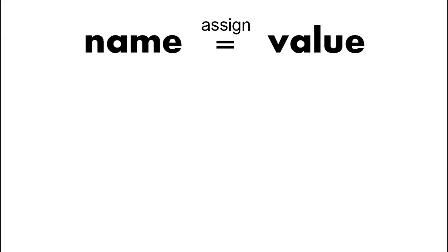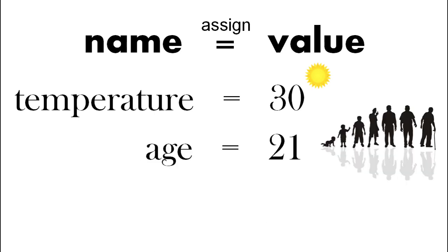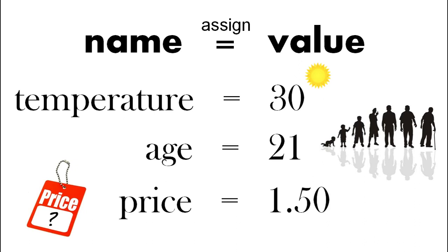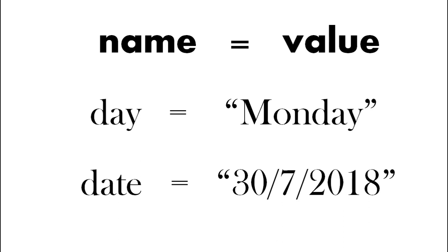Giving it a value is called assign. So we can assign the variable temperature the value 30 or the variable age the value 21 or the variable price 1.5 or 150. In Python we can also give string values so we can have day equals Monday or even the date in a string, a string of characters.